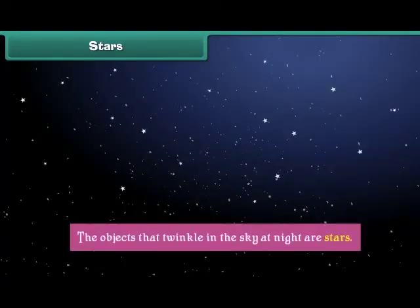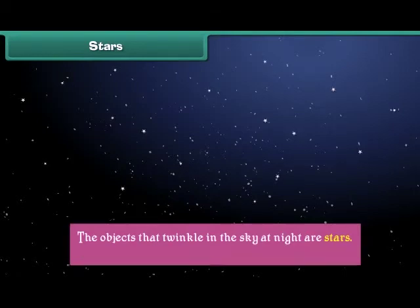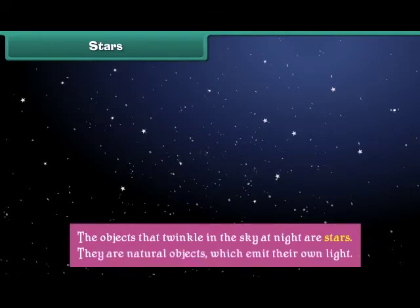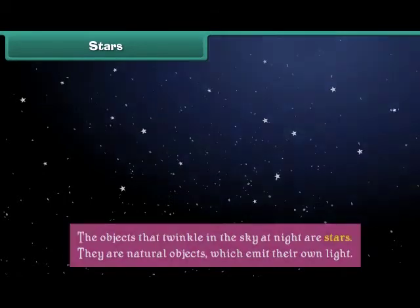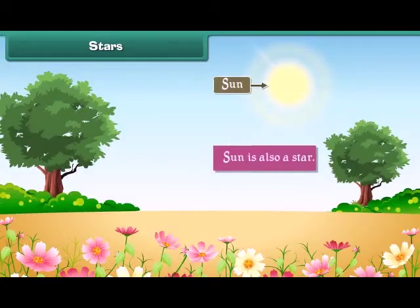The objects that twinkle in the sky at night are stars. They are natural objects which emit their own light. The Sun is also a star.